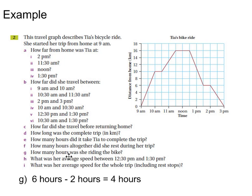G: How many hours was she riding the bike? You've got to be very careful here. Altogether there's 6 hours, but at the same time she was resting for 2 of those. So we go 6 hours minus 2 equals 4 hours.